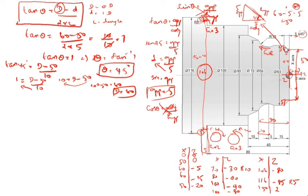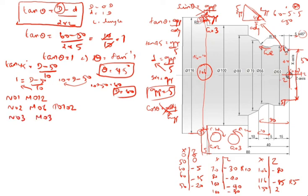Now we will write the program. N01 M012 — M012 is clamping the workpiece. First we clamp the workpiece, then we start the program. N02 M06 T0102 — M06 is tool change, T010 is tool number. You can write T0106 or whatever it is. N03 M03 S2000 — M03 is spindle on, and the speed is 2000. N04 M08 — coolant on.